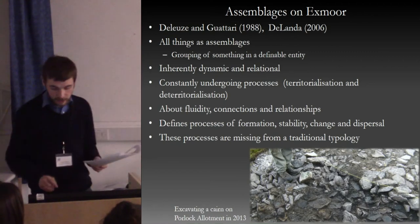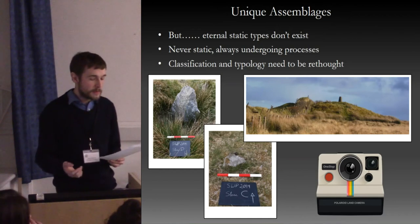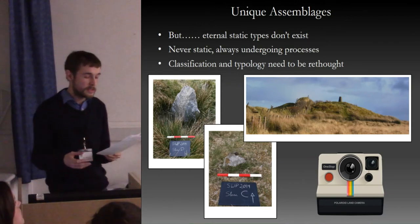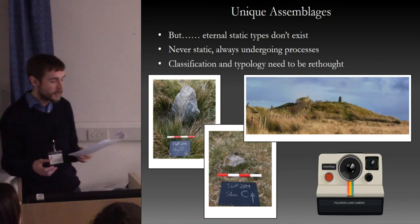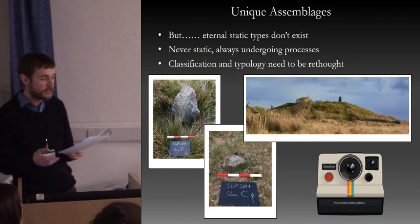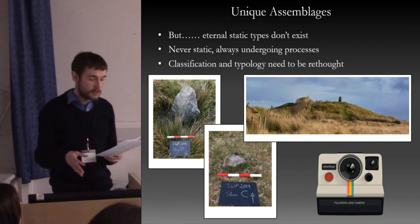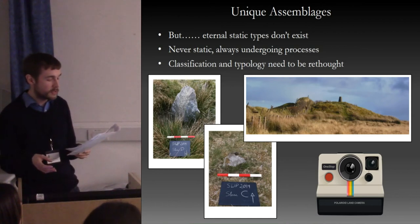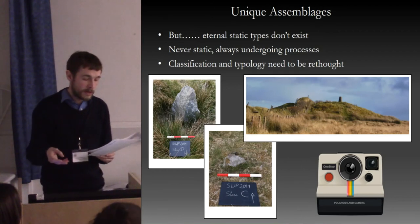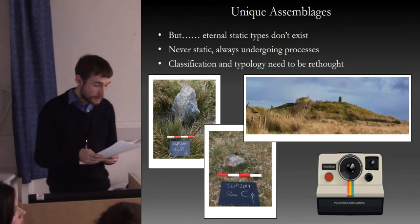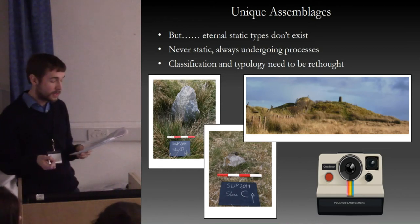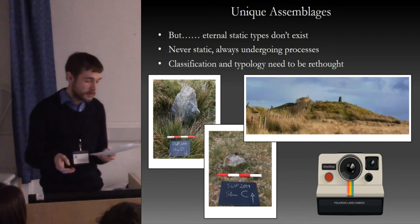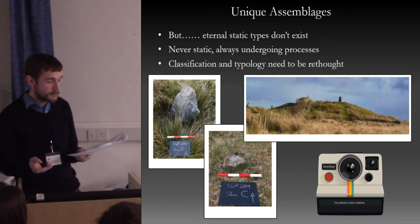I would argue that it is these processes and the complex relationships between different assemblages that are missing from a traditional archaeological typology, and that the Deleuzian approach allows us to question and elucidate what is taking place between the types. However, there is another problem: eternal static types do not strictly speaking exist in a Deleuzian framework, because every assemblage is a unique and historically distinct entity always undergoing processes of change. Types, however seemingly fixed, are never actually static entities and remain under the influence of territorializing and deterritorializing processes — their apparent stability results from territorializing forces being much greater than those working to tear them apart.